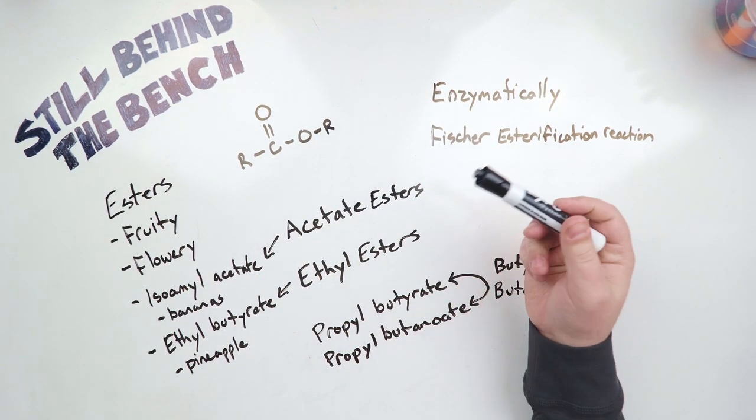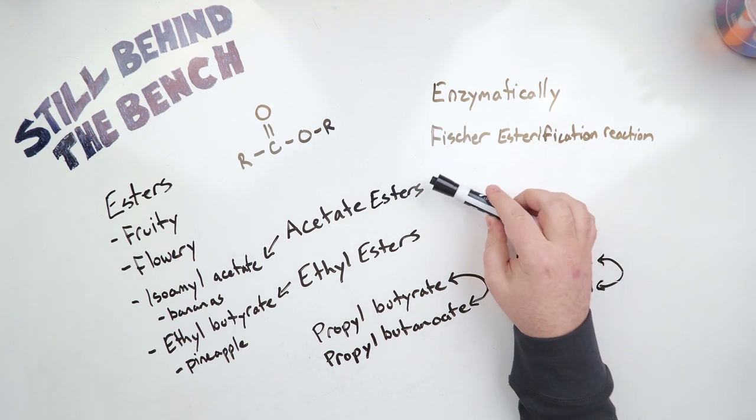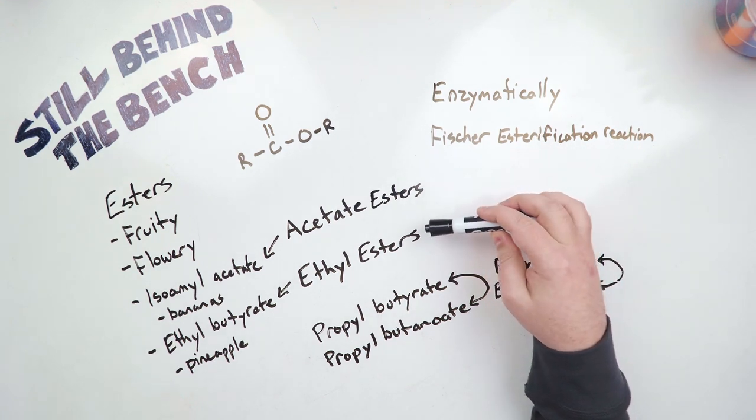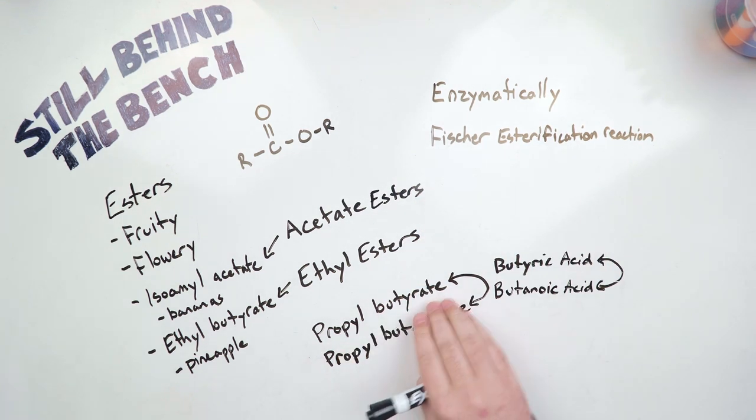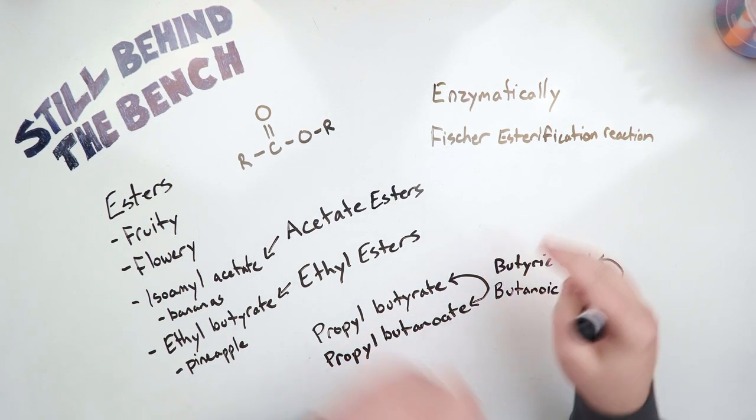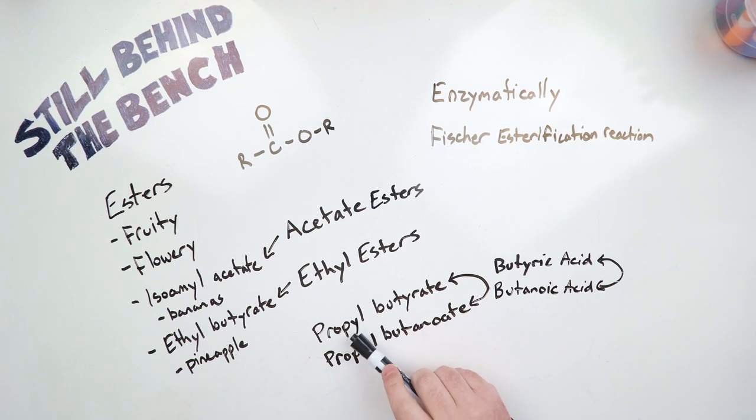So most of the esters that are produced by yeast are either acetate esters or ethyl esters. There are some others like propyl butyrate, which is also known as propyl butanoate, just different naming conventions. Propyl butanoate is more correct, but propyl butyrate is more well known.